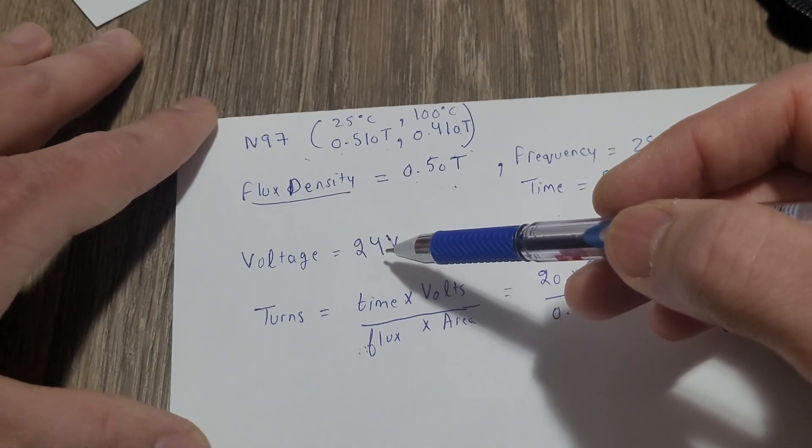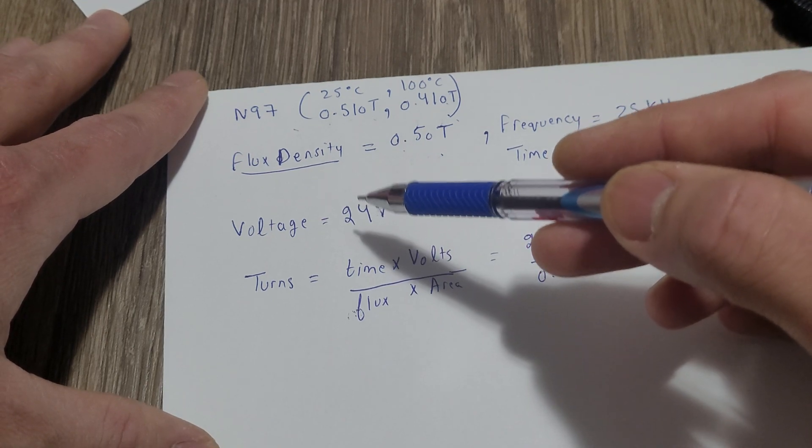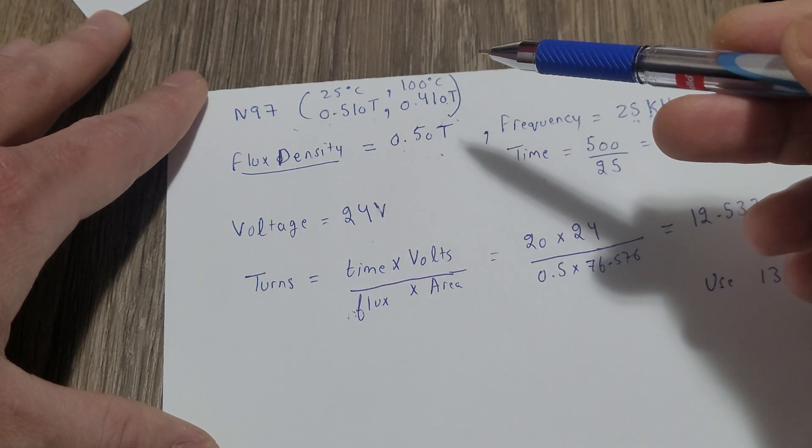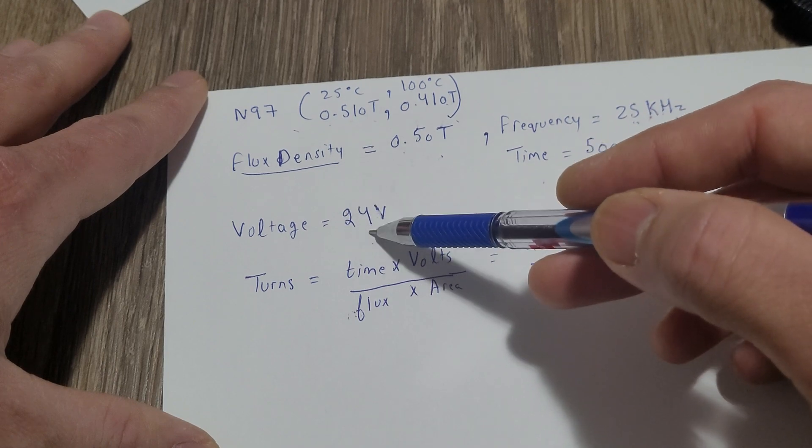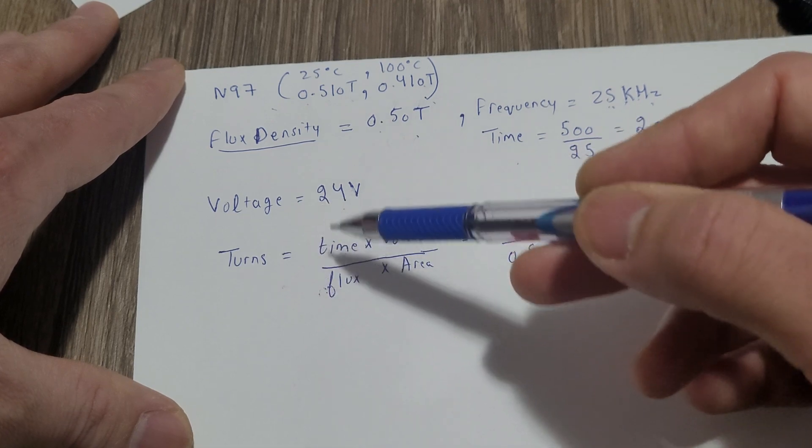And I will be using 24 volts to power up my GDT. If you are using 12 volts for your MOSFETs, plug in that value here. This will give you the number of turns required for your GDT.